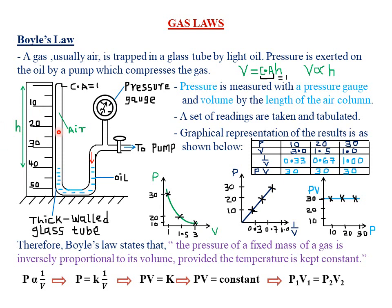Consider these sample values: when the pressure was 10, the volume was 3; when the pressure was 20, the height of the air column was 1.5; when the pressure was 30, the height was 1. Notice that as pressure increases from 10 to 30, the volume is reducing — this is an inverse proportionality.